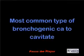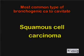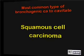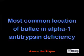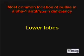What is the most common type of bronchogenic carcinoma to cavitate? Squamous cell carcinoma. What is the most common location of bulla in alpha-1 antitrypsin deficiency? The lower lobes.